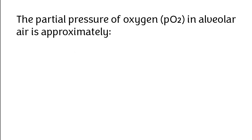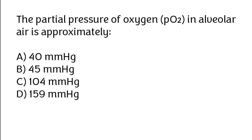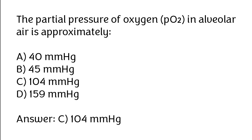The partial pressure of oxygen in alveolar air is approximately: (A) 40 mmHg, (B) 45 mmHg, (C) 104 mmHg, (D) 159 mmHg. Correct answer is option C, 104 mmHg.